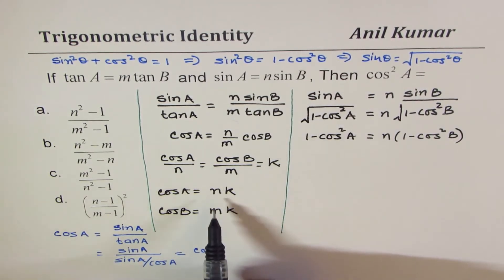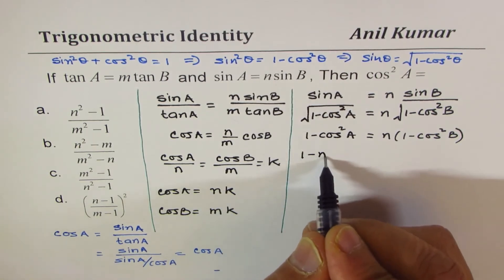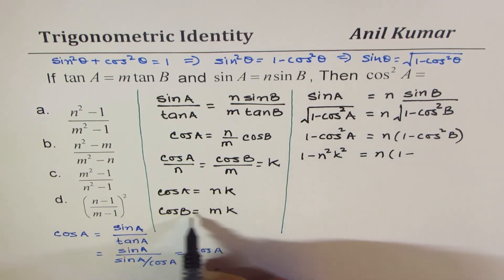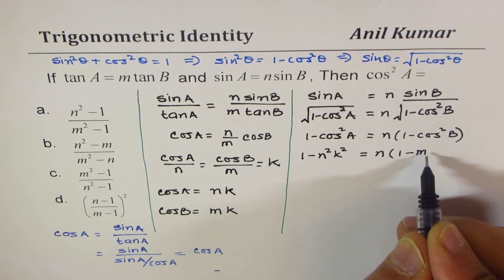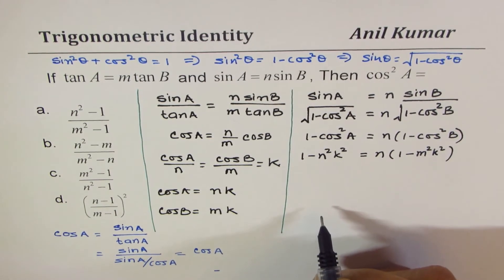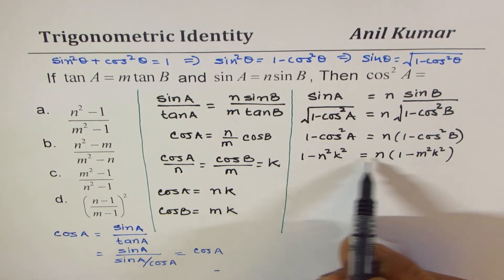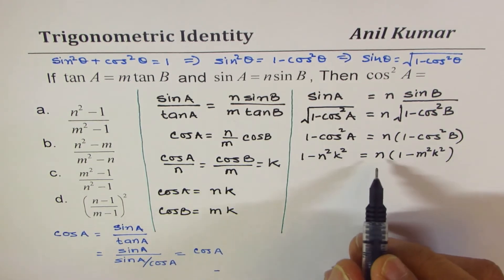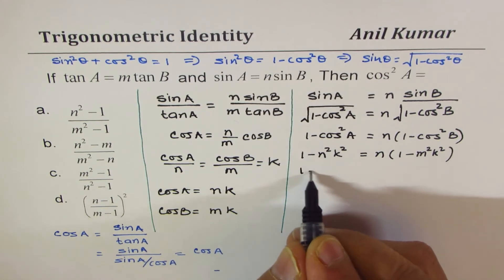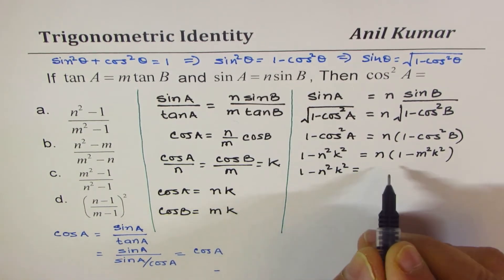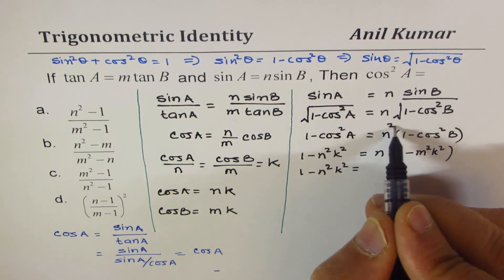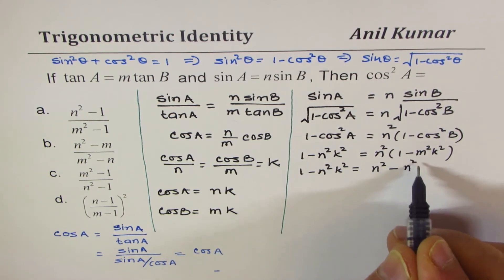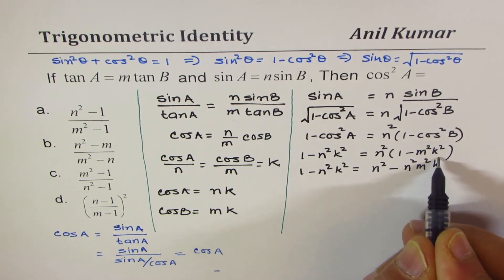If I square both sides, I get 1 minus cos square A equals n times 1 minus cos square B. Cos square A, let me replace with nk. So I have 1 minus n square k square equals n times 1 minus cos B as mk. Now we got n and k's involved. So let's rearrange them. We have 1 minus n square k square equals, when you square, this also becomes square. So we have n square minus n square m square k square.